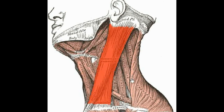Another primary muscle of the head and neck is the sternocleidomastoid muscle. It originates on the manubrium of the sternum and the clavicle, and inserts on the mastoid process of the temporal bone. It performs various actions: it rotates the head towards the opposite side, flexes the head, and elevates the sternum and ribs if the head is stabilized.